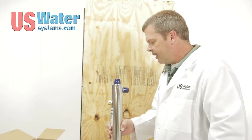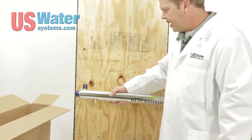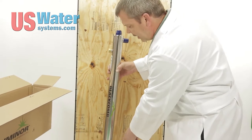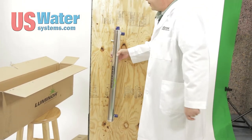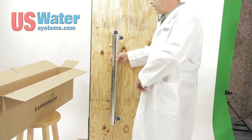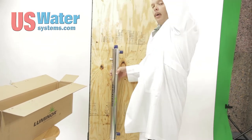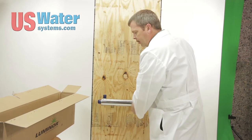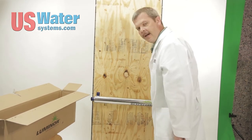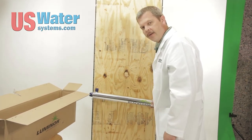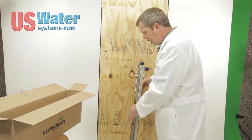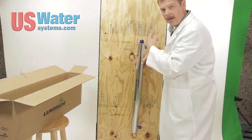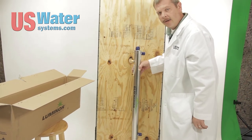These UVs can be mounted vertically or horizontally. We like to mount them vertically and come in from the bottom and go out from the top. When you do this, you have to make sure you have adequate clearance to pull the bulb out when it's time to change the bulb. You don't want to put this backed up into a corner where you can't get the bulb out and you have to remove the system every time. You basically want the same amount of clearance as the length of your UV so you have plenty of room to get the bulb out when it's time for a change.